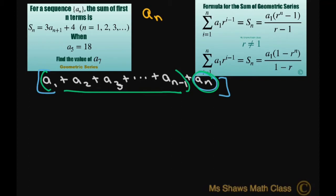We're going to take, let s sub n equal what they gave us, 3 times a sub n plus 1 plus 4. Then that means the terms before that last term, s sub n minus 1 equals 3 times a sub n. This minus 1 plus 1 is just going to be 0, so it's just going to be a sub n.